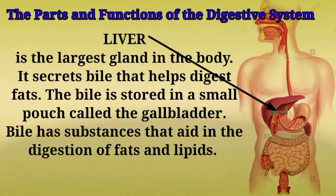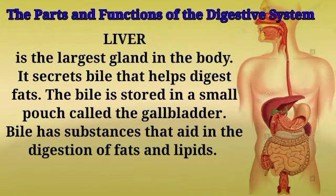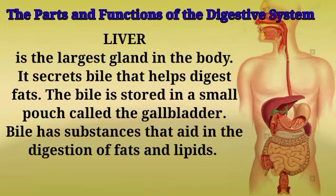The liver is the largest gland in the body. It secretes bile that helps digest fats. The bile is stored in a small pouch called the gallbladder. Bile has substances that aid in the digestion of fats and lipids.